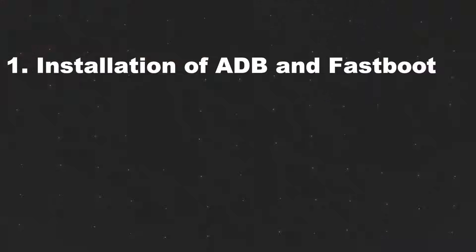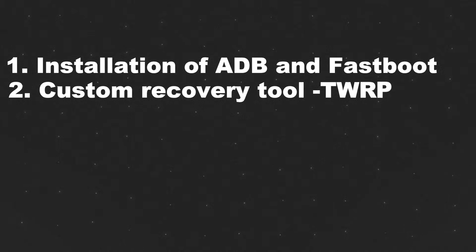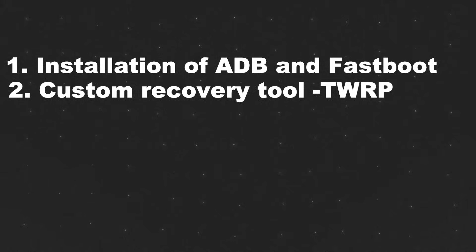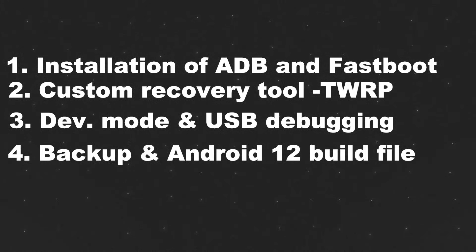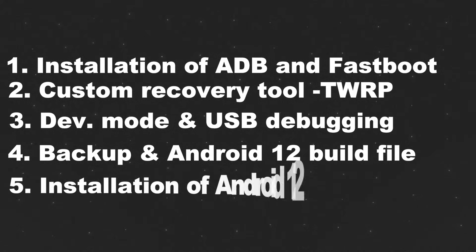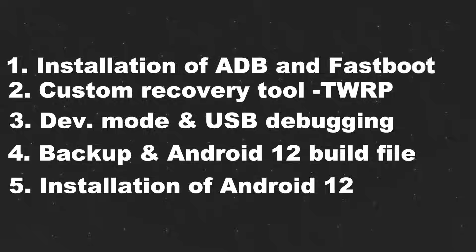The first step will be installation of ADB and fastboot to your computer. Second, you need a custom recovery boot which is TWRP, enable developer mode and USB debugging on your mobile phone, create a backup for your data and download the Android 12 build file. And last, installation of Android 12.